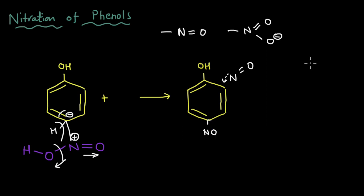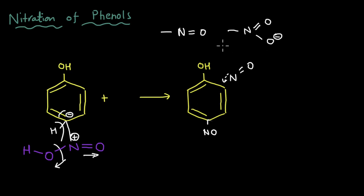One more thing to note: in the case of NO2 there was hydrogen bonding, because the hydrogen from the OH and the oxygen of NO2 — which is in a plane different from that of the nitrogen — would form a hydrogen bond. But in case of NO, the oxygen is in a different plane from this hydrogen, so hydrogen bonding is also very weak. Because of both factors — the steric repulsion between the two oxygens and the lack of hydrogen bonding — the para product is the major product when phenol reacts with HNO2, giving para-nitrosophenol as the major product.